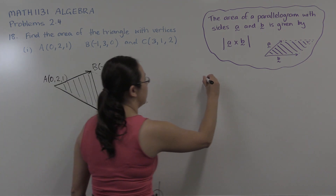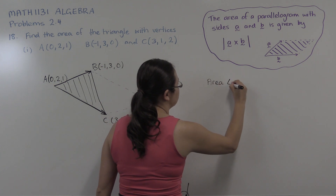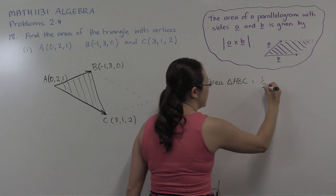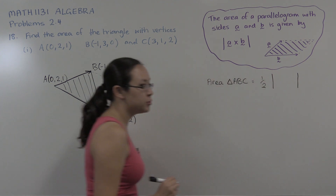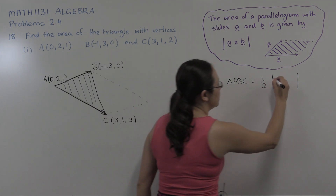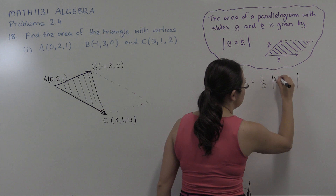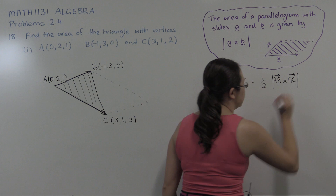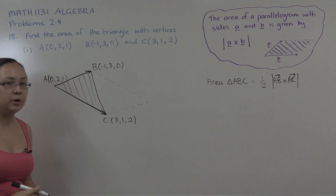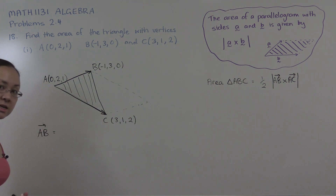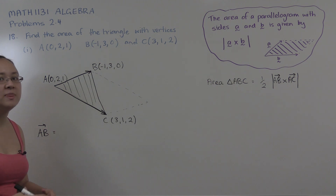We're trying to work out the area of triangle ABC, and we know this is going to be half of the length of the cross product between vector AB and vector AC. So we just need to work out these components: what vector AB is, what vector AC is, their cross product, and then the length of that.